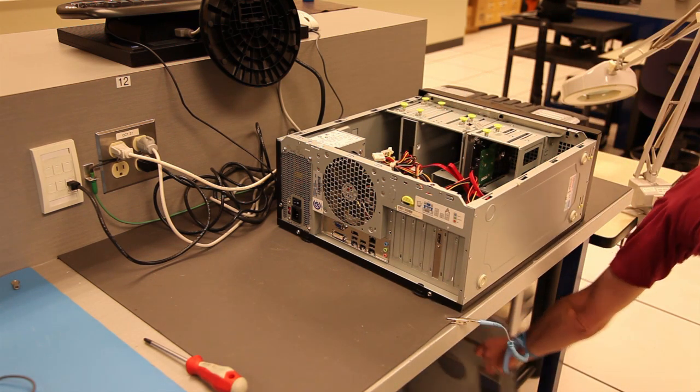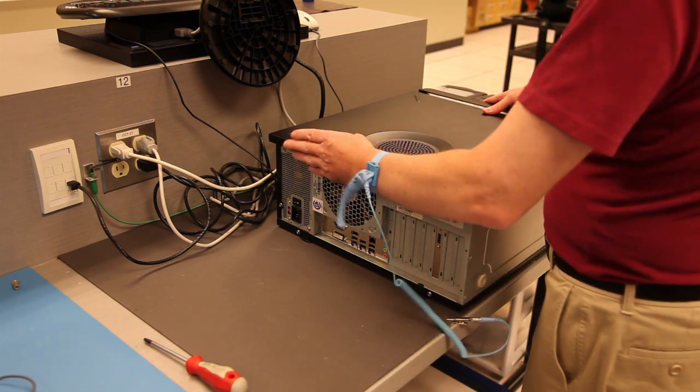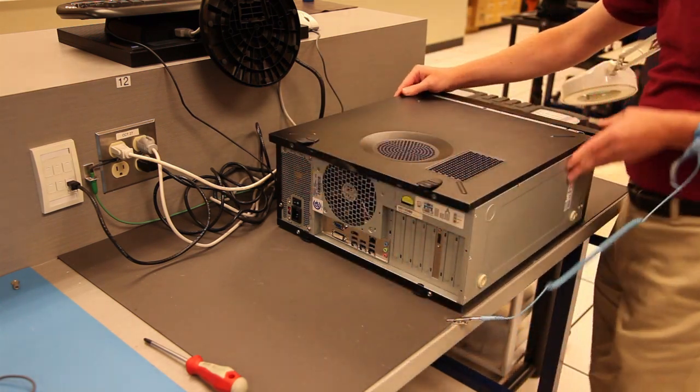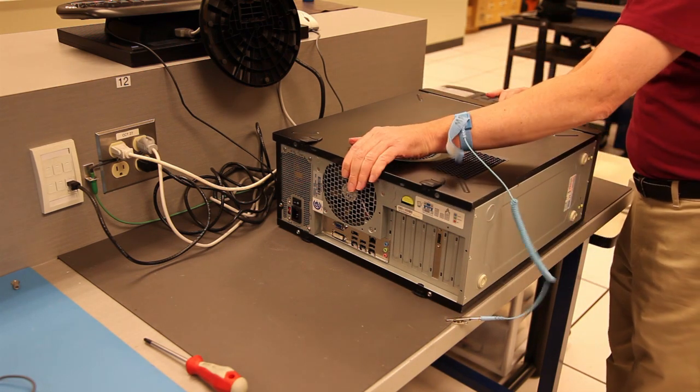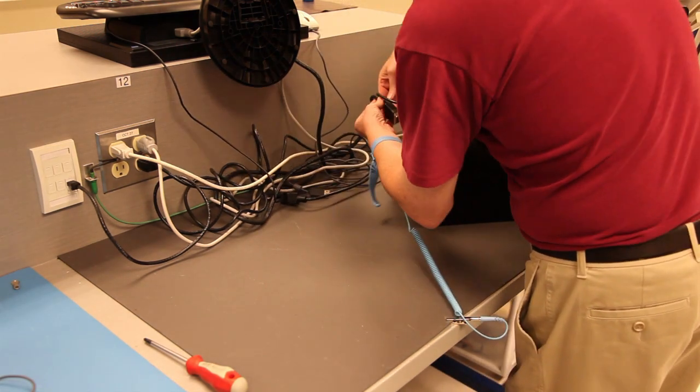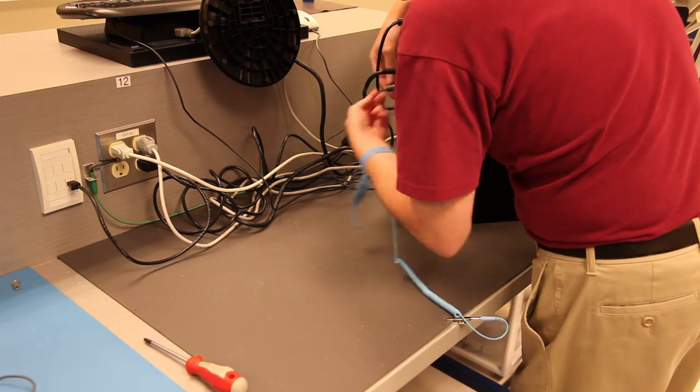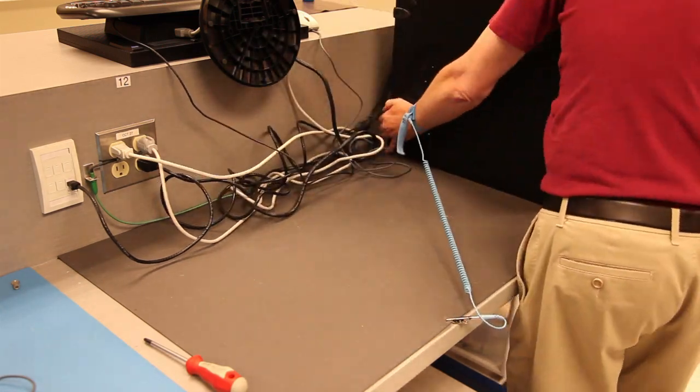It's usually easiest to put the side cover back on when the PC is still laying on its side. Now that the side cover is back on, stand your PC back up, connect all the cables at the back, and turn on the switch on the power supply. Then test it.